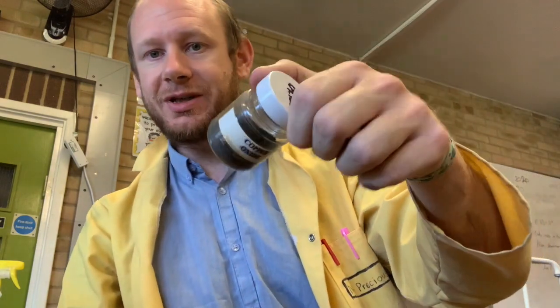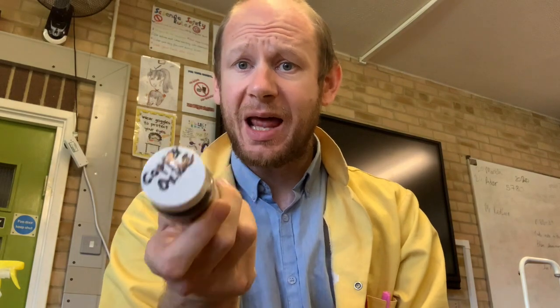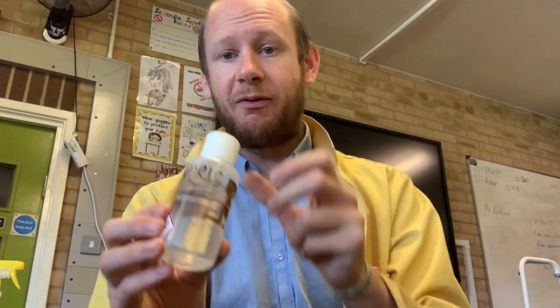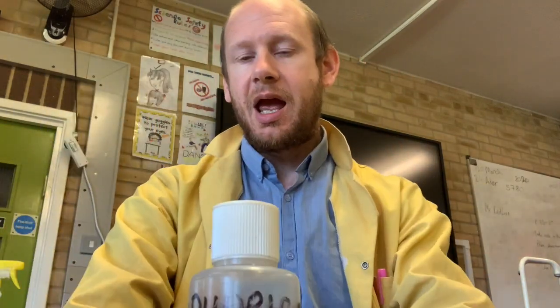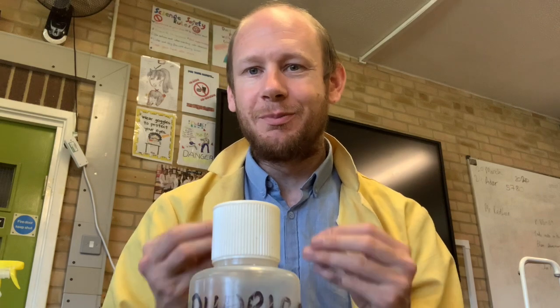It's this black powder here. This black copper oxide will react with my sulfuric acid, which I have here. By reacting these two together, I'm hoping to create a solution of copper sulfate crystals. And then by evaporating off the water, we'll get some pure solid crystals of copper sulfate. Let's have a look at what that will look like.